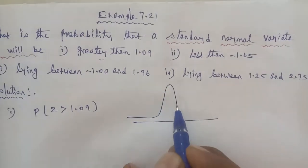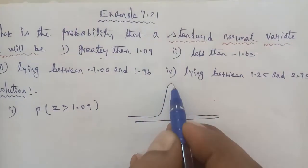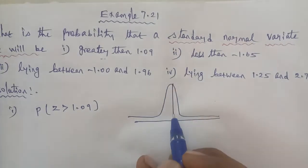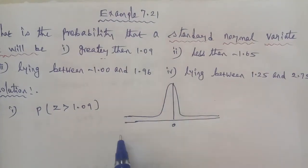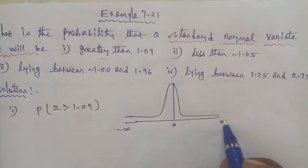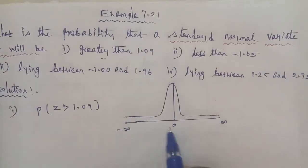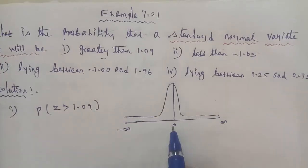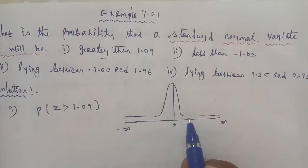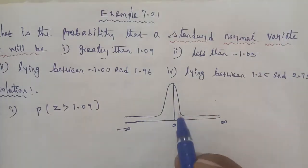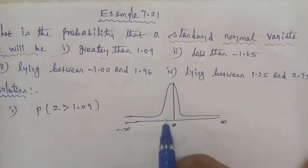On the bell-shaped curve, the middle value is 0, ranging from minus infinity to plus infinity. The area from 0 to infinity is 0.5, and the area from 0 to minus infinity is also 0.5. So the total area is 1. The total area value up to 1.09 needs to be found.